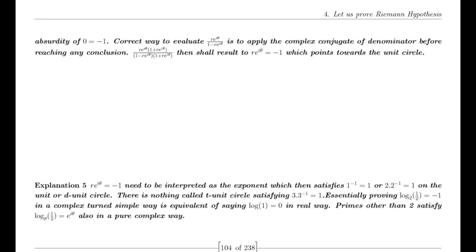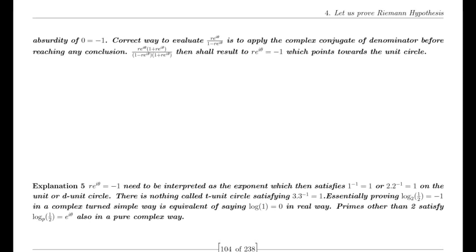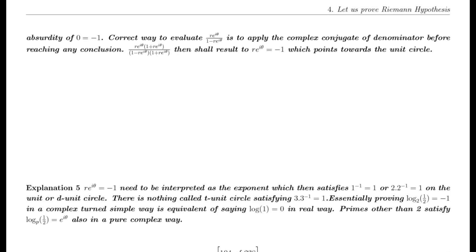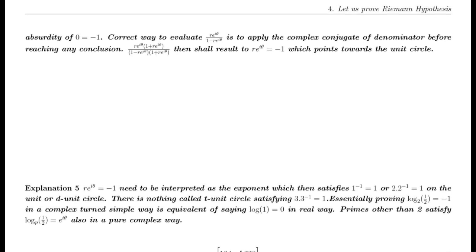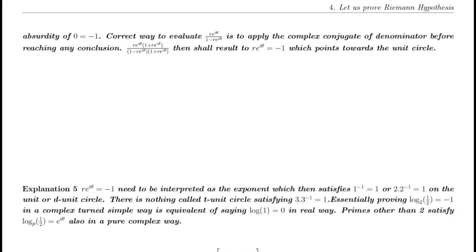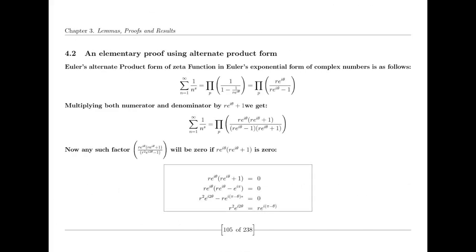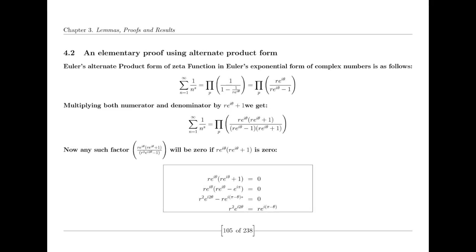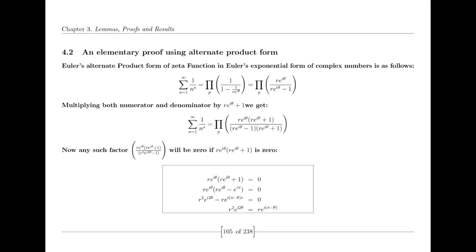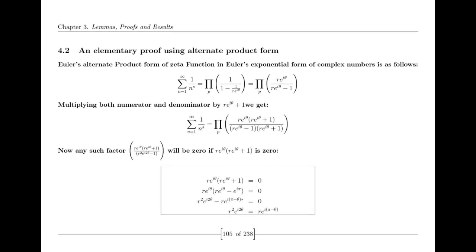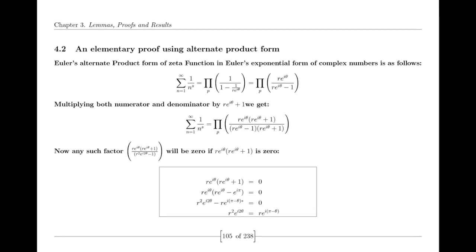Post-unification, the combined function of the Riemann zeta function and its harmonic conjugate does not become zero but remains constant at a₀, which equals one. This result is a direct consequence of the alternate functional equation used in the proof. The constancy of the function at this value signifies a successful integration of the zeta function with its harmonic conjugate, ensuring the function is entire and well-behaved across the complex plane.